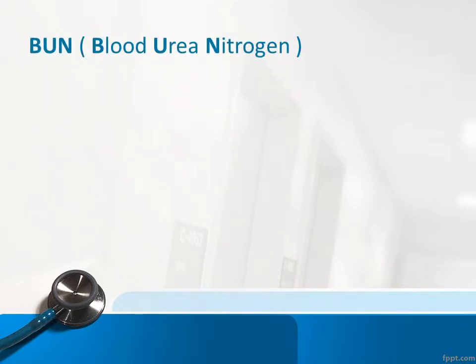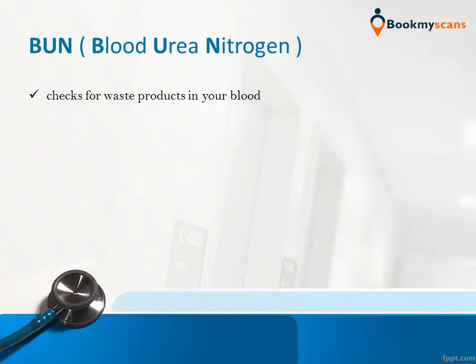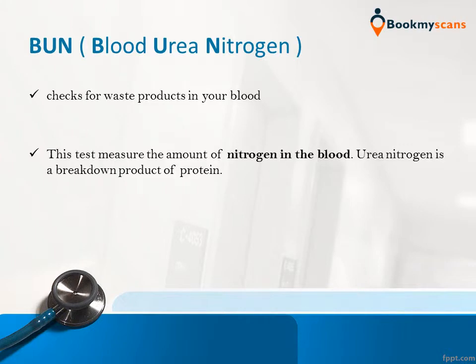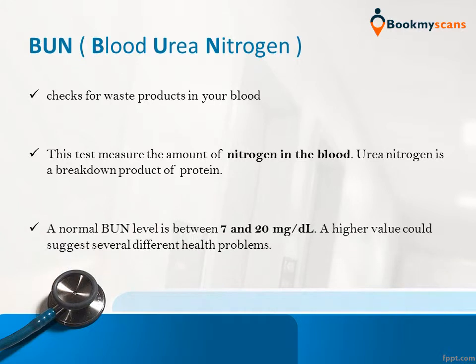The Blood Urea Nitrogen (BUN) test checks for waste products in your blood and measures the amount of nitrogen in the blood. Urea nitrogen is a breakdown product of protein. A normal blood urea nitrogen level is between 7 and 20 mg per deciliter. A higher value could suggest several different health problems.